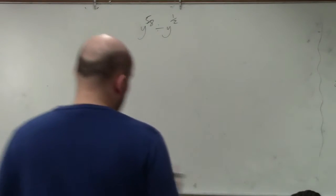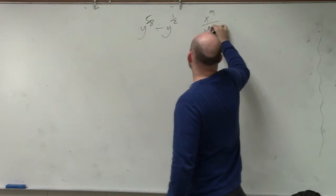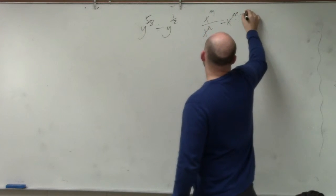So in this example, if you guys remember the rules of exponents, basically x to the m divided by x to the n equals x to the m minus n.